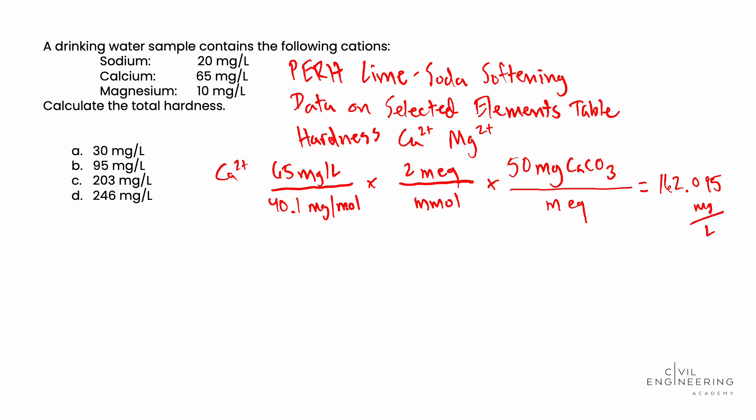We'll then do the same exercise with our magnesium cation, Mg2+. We're given in the problem statement 10 mg per liter of magnesium. From the data on selected elements table, the molecular weight of magnesium is 24.3 mg per mole. We then multiply this by the coefficient in front of magnesium in the lime soda softening equations, which is 2 molar equivalents per mole.